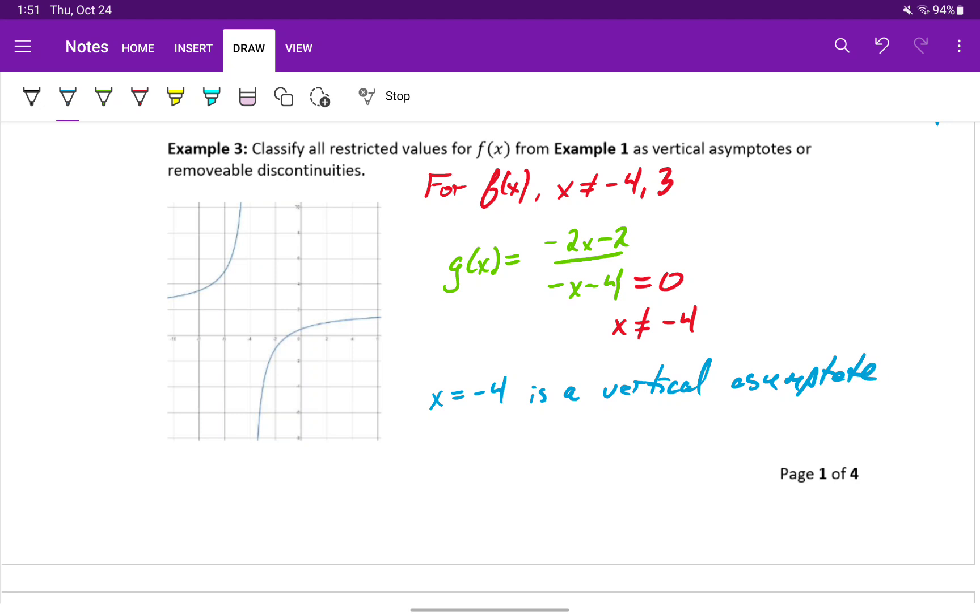Since the original function is undefined at three, but the reduced function is defined there, that's no longer a restricted value. Then x equals three is a removable discontinuity.